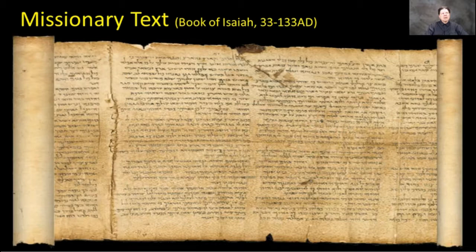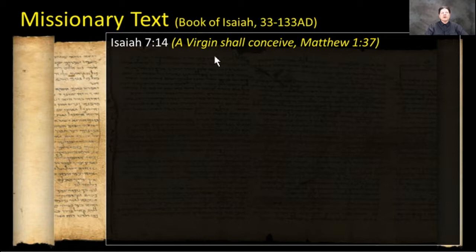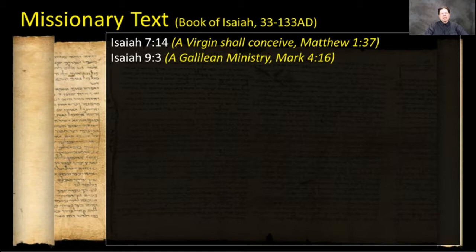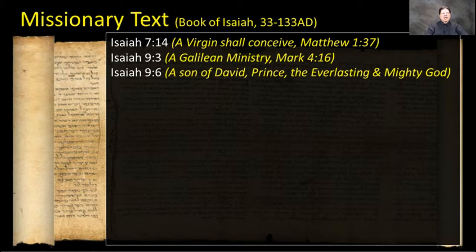Isaiah 7:14 — a virgin shall conceive. The rabbis changed this to remove the word 'virgin' to discredit the missionaries coming into the synagogues, around 130-136 AD. The Galilean ministry of Jesus is in Isaiah 9:3, confirmed by Mark 4:16. Isaiah 9:6 says Jesus would be a son of David, a prince, the everlasting and mighty God. Many who believe in the Trinity don't want to call Jesus the everlasting and mighty God, but he is both Father and Son — the Father manifest in flesh (1 Timothy 3:16). If you've seen Jesus, you've seen the Father. Isaiah 9:7 and 11:1 and 11:10 show he is an heir to David's throne. Isaiah 11:12 says the Spirit of God rests upon him. Isaiah 11:4-5 shows he is granted authority to judge the earth. Isaiah 40:3-5 says his way will be prepared — done in John 1:19-28 by John the Baptist.